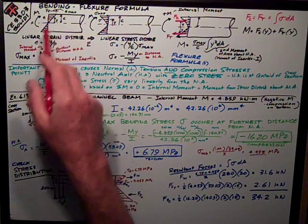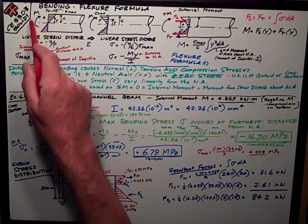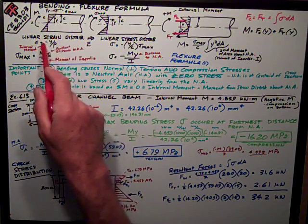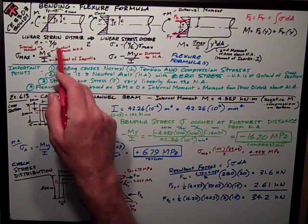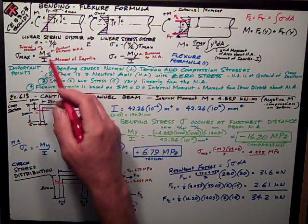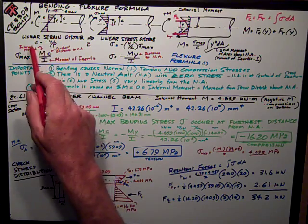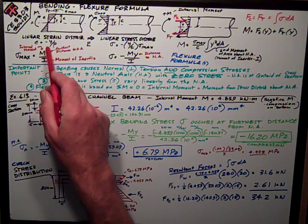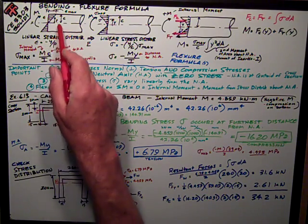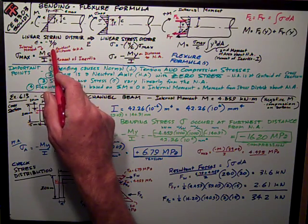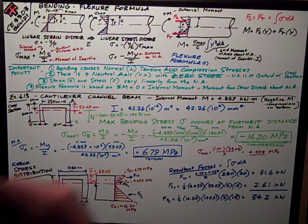The book shows how it's derived due to a moment, the strain distribution is derived in that way. There's this point of curvature out here, and strain is a linear function of the distance from the neutral axis, y, over rho, that radius of curvature.